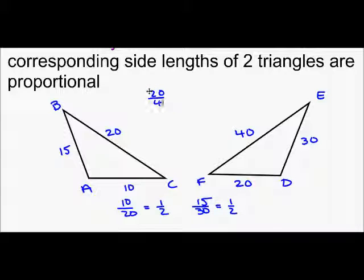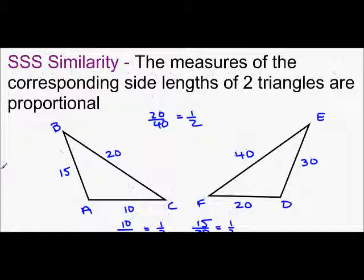20 over 40, 1 half. So, even though these triangles are not oriented in the same direction, since each pair of corresponding sides is proportional, these triangles are similar by SSS similarity.